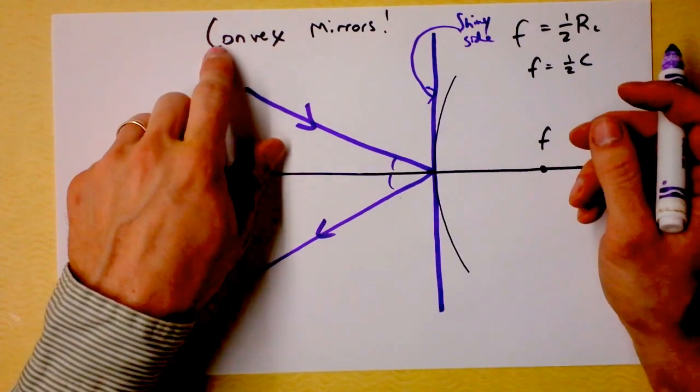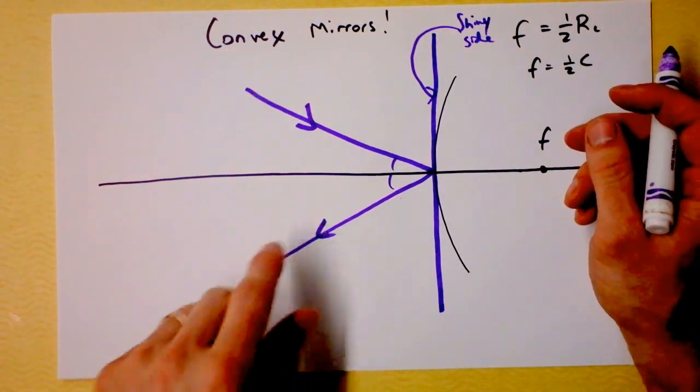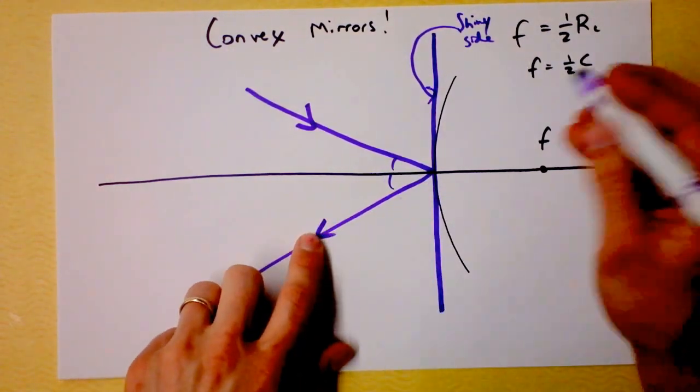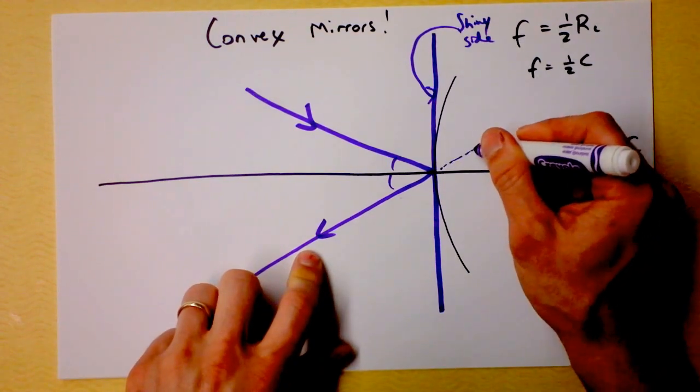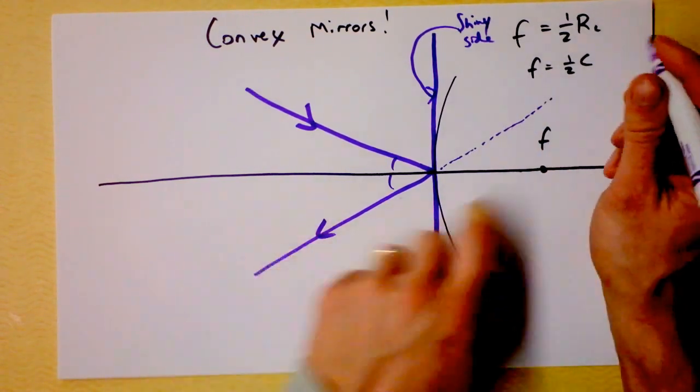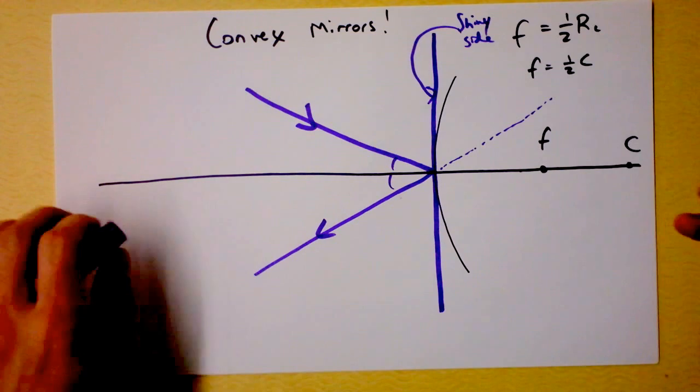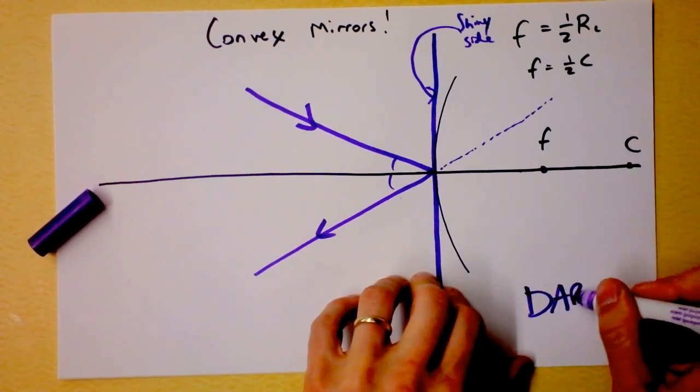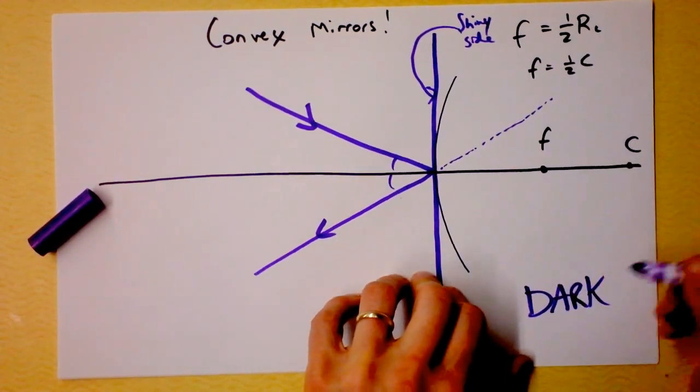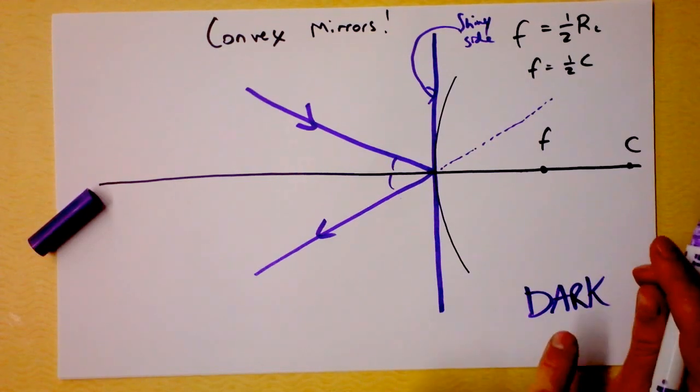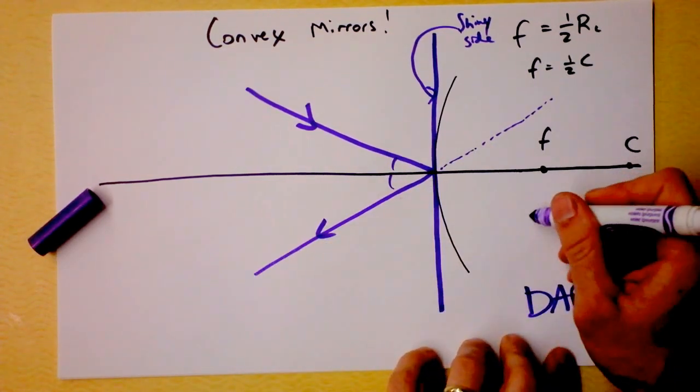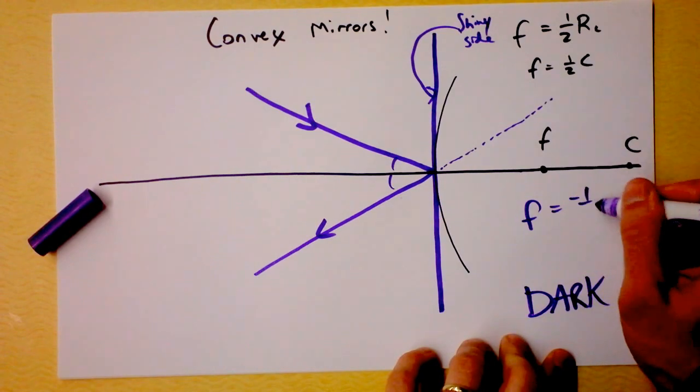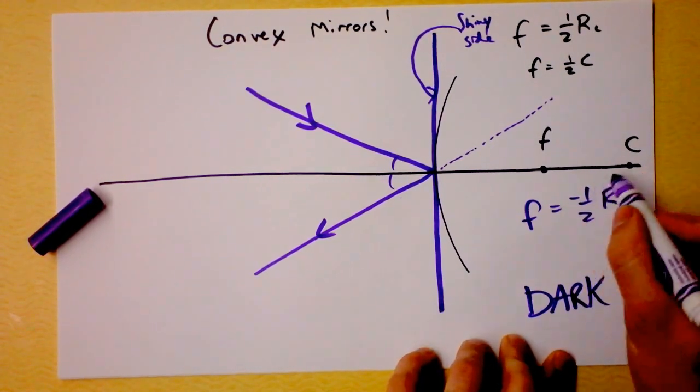Now, the interesting thing about a convex mirror is there's actually light over here. But when you look at light that's over here, you think that it came from over there. So I'm going to make dotted lines over on the right side, even though this entire side over here is dark. So for a convex mirror, I'm going to actually say that F is negative one half R.